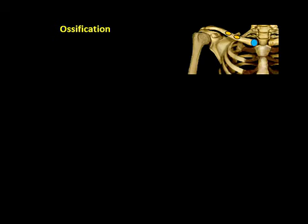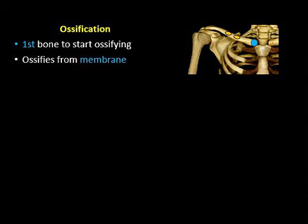The clavicle is a very peculiar bone. First, it is the first bone to start ossifying — the primary center appears in the fifth or sixth week of intrauterine life, whereas all other bones have their primary centers appearing in the eighth week. Second, it ossifies from membrane; it is the only bone in the appendicular skeleton which ossifies from membrane.